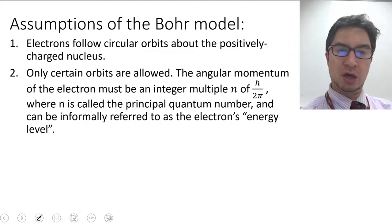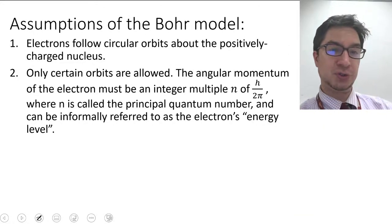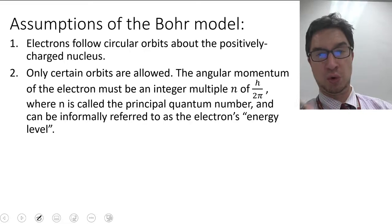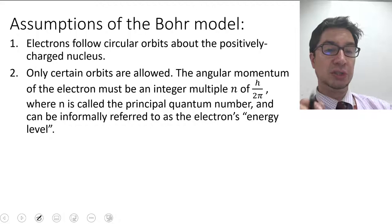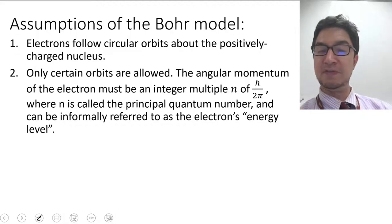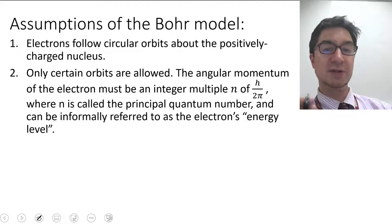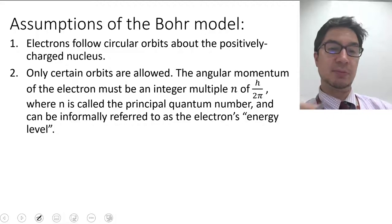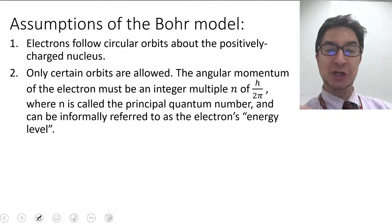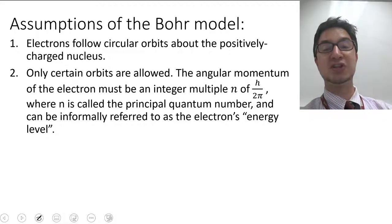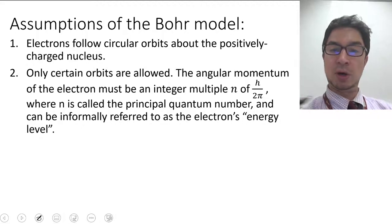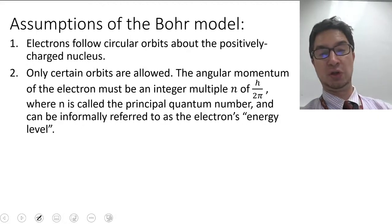Let's take a look at the assumptions of the Bohr model. First, electrons follow circular orbits about the positively charged nucleus. Bohr also assumed that only certain orbits are allowed. He assumed the angular momentum of the electron must be an integer multiple n of the factor h over 2 pi, where n is called the principal quantum number and can informally be referred to as the electron's energy level.